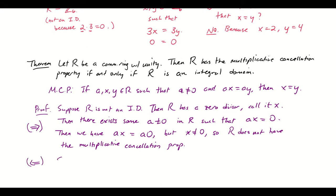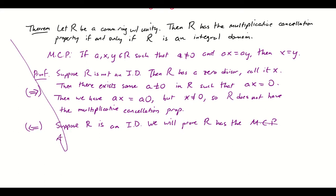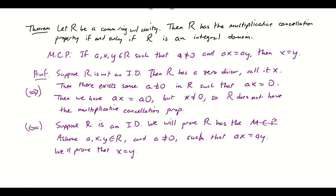Now for the leftward direction. Suppose R is an integral domain; we will prove R has the multiplicative cancellation property. Assume a, x, and y belong to R, a is non-zero, and ax equals ay. We need to prove that x equals y. If I can prove that, then anytime I have ax equals ay with a non-zero, I can cancel off that a — that proves the multiplicative cancellation property.